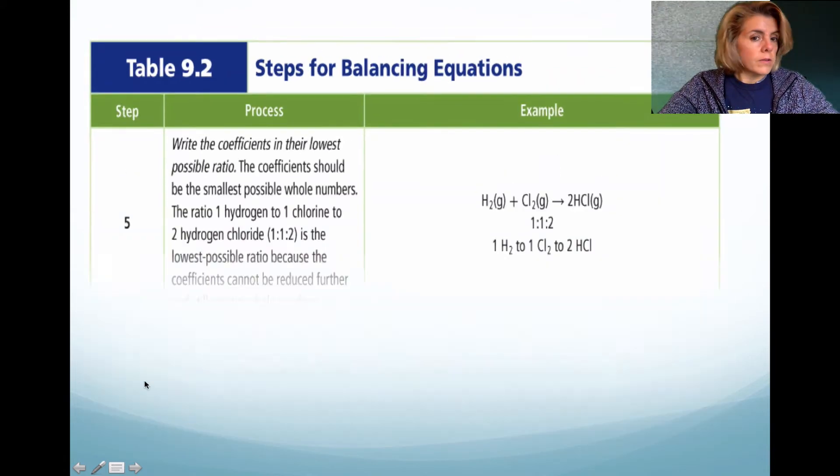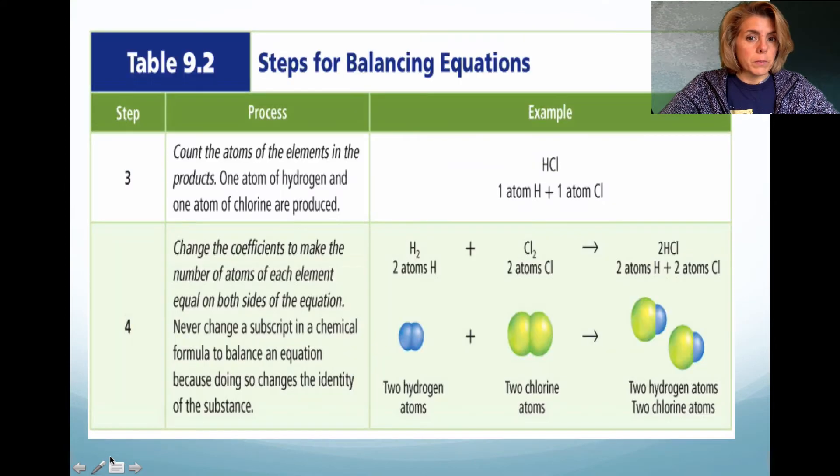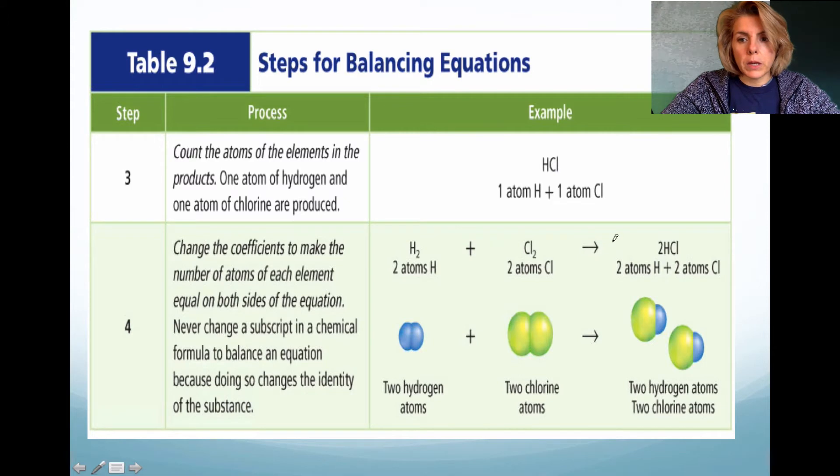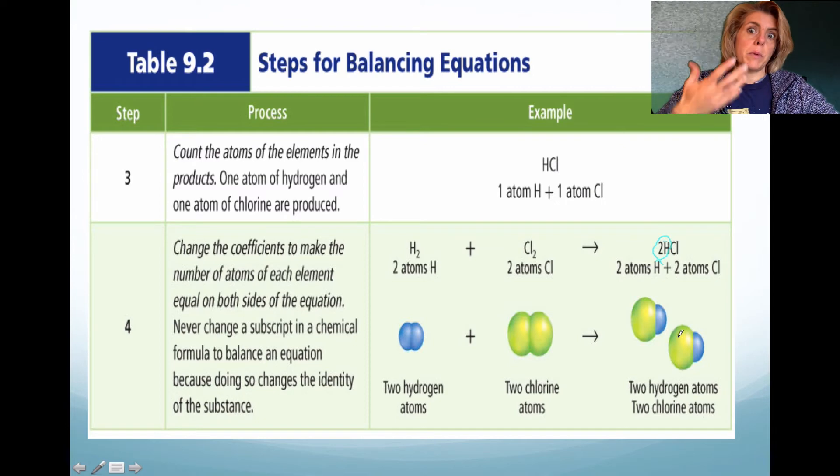In this next step here, we actually have to put a 2 in front of the HCl, because if we just had one hydrogen, one chlorine, that would not equal the number of atoms that we have on the left-hand side. So we double the product. And by doing that, we have two chlorine atoms and two hydrogen atoms. So this is what a balanced chemical equation would look like.